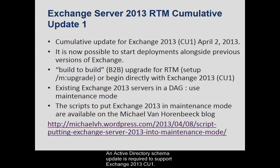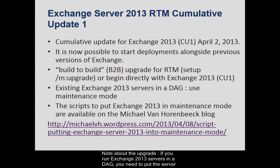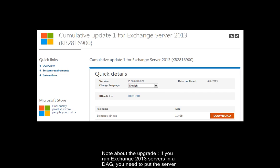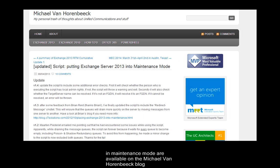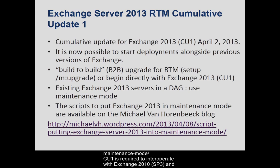An Active Directory schema update is required to support Exchange 2013 CU1. This is a different version to the schema update released with Exchange 2010 SP3. If you run Exchange 2013 servers in a DAG, you need to put the server into maintenance mode before you apply the CU1 update. The scripts to put Exchange 2013 in maintenance mode are available on the Michael VanHorenbeek blog. CU1 is required to interoperate with Exchange 2010 SP3 and Exchange 2007 SP3 RU10.